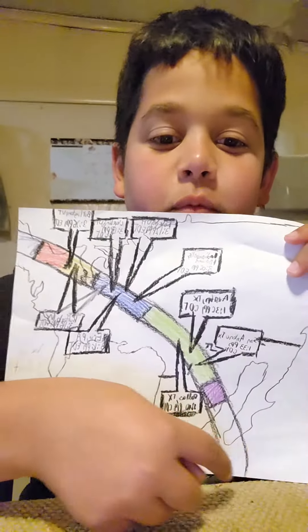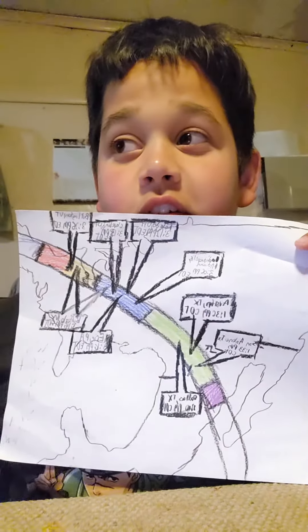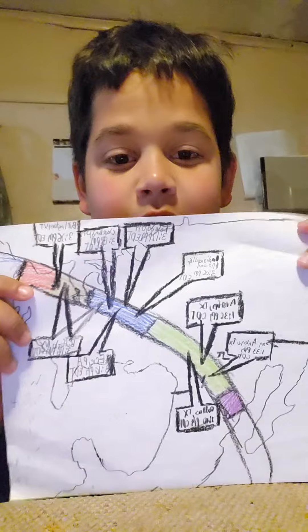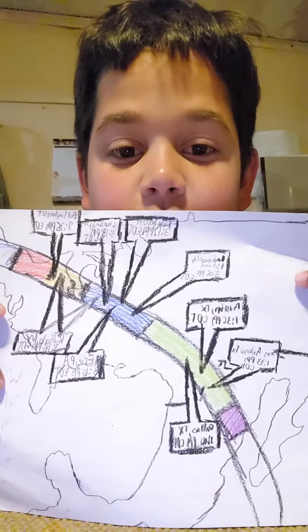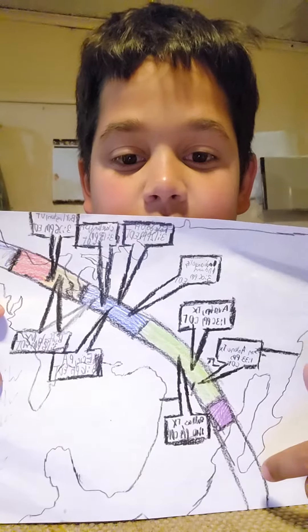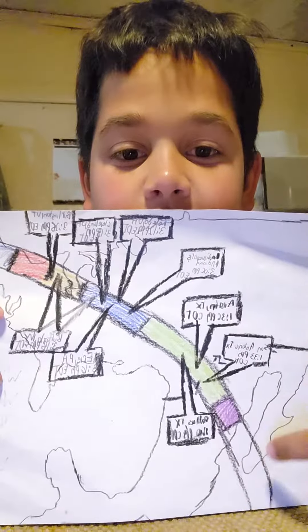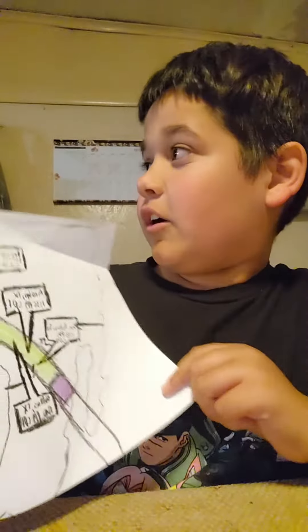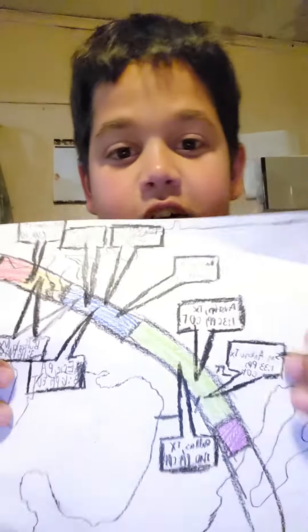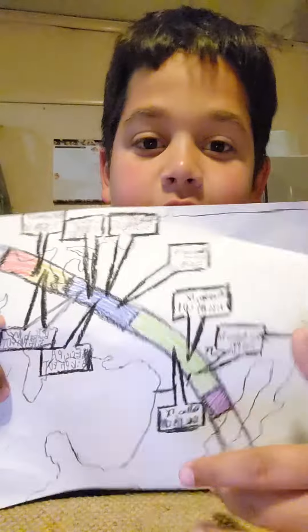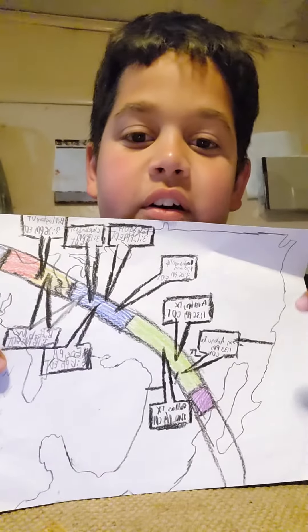The path of totality is where all the complete darkness is going to be. Three cities in Texas—San Antonio, Dallas, and Austin—they're in the earliest stage of the path of totality.